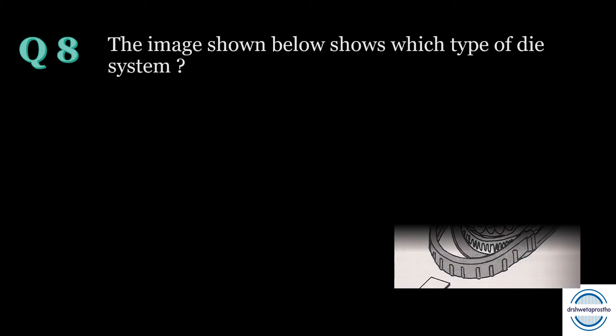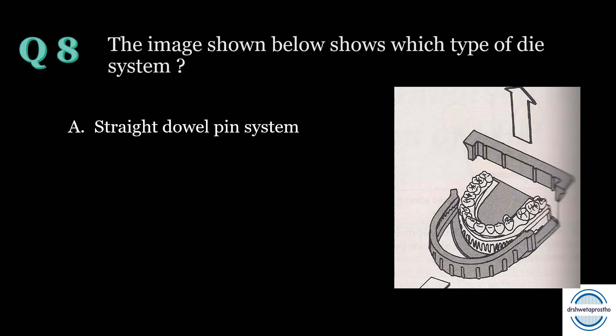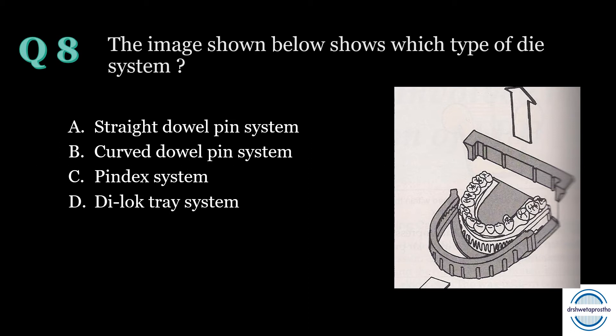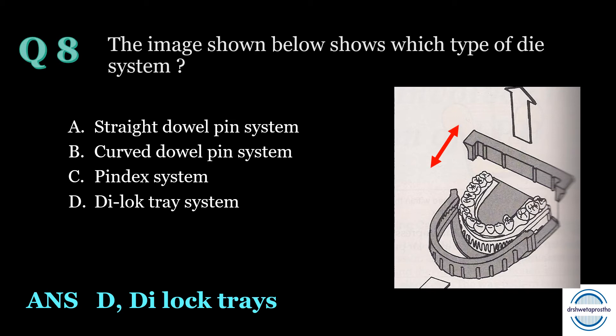Question number eight: The image shows which type of die system? A) straight double pin system, B) curved double pin system, C) pindex system, or D) dialogue tray system? The answer is D — dialogue tray system. As seen in the image, it is a special tray used to pour the cast. It has multiple components which can be assembled and dismantled. It has orientation grooves on the inner aspect obtained on the base of the cast when poured, and these grooves act as guides for dissectioning.